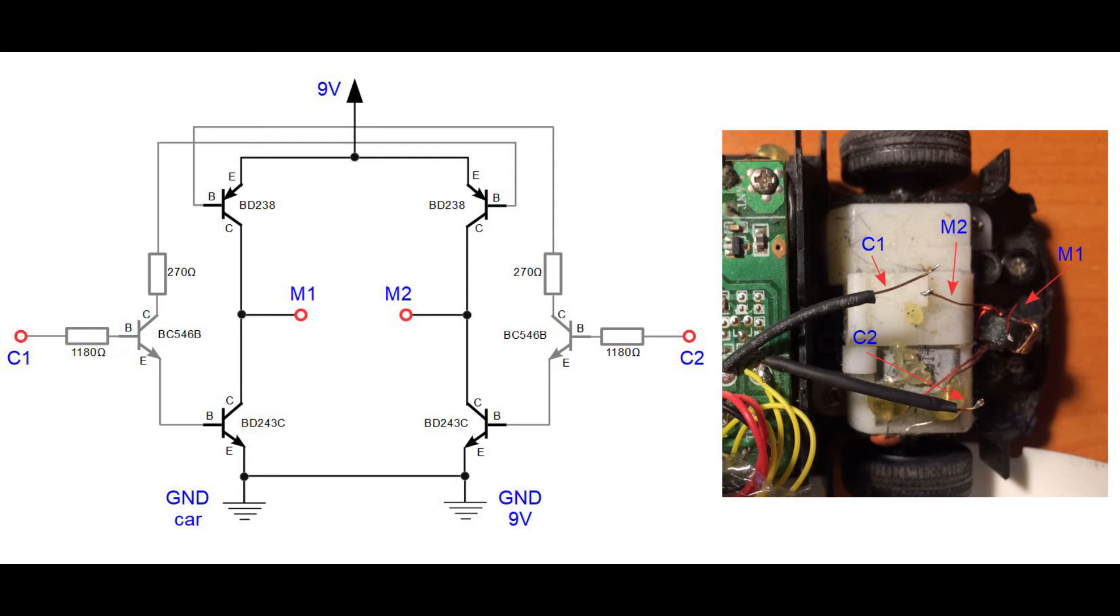Don't worry too much about mixing C1 and C2 wires in place. The only thing that can go wrong is that the car will go backwards instead of forwards, in which case you simply have to swap the two wires in place. Same applies to the M1 and M2 wires.